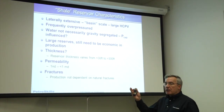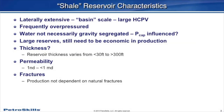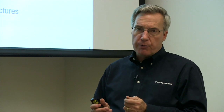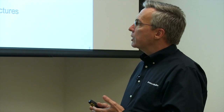Obviously these still need to be economic in order to develop. The thickness varies considerably — sometimes less than 30 feet, sometimes several hundred feet thick. The permeability can be down in the nano-Darcy range — obviously very tight rock — but we also see sections that sometimes have permeability in the tenths of millidarcies.